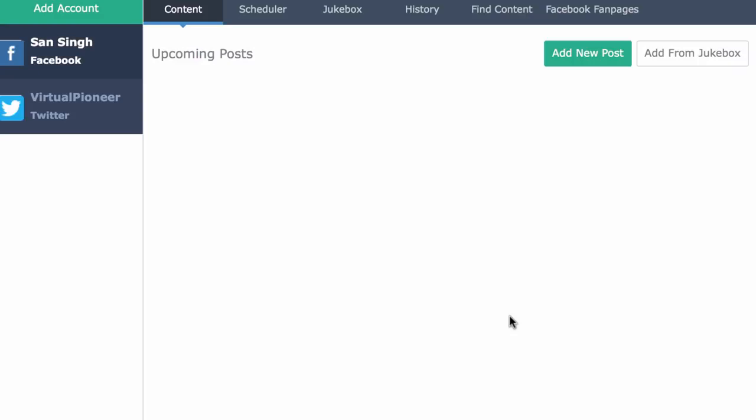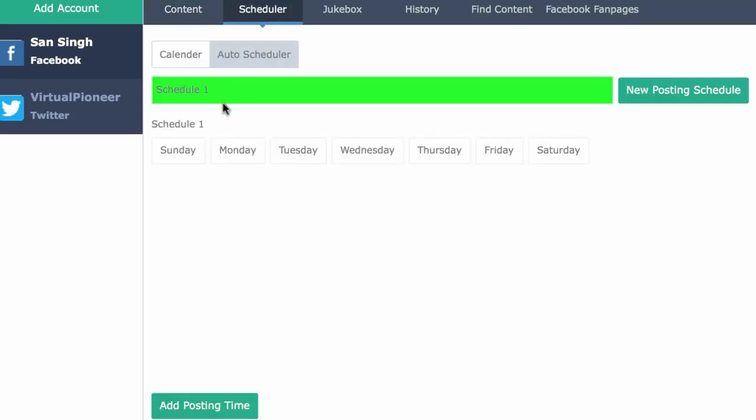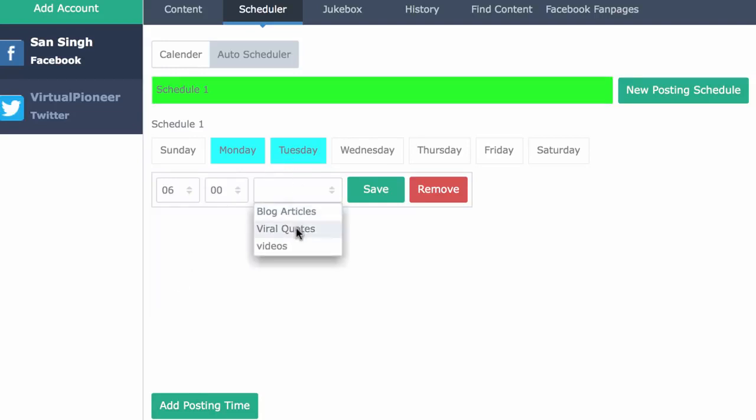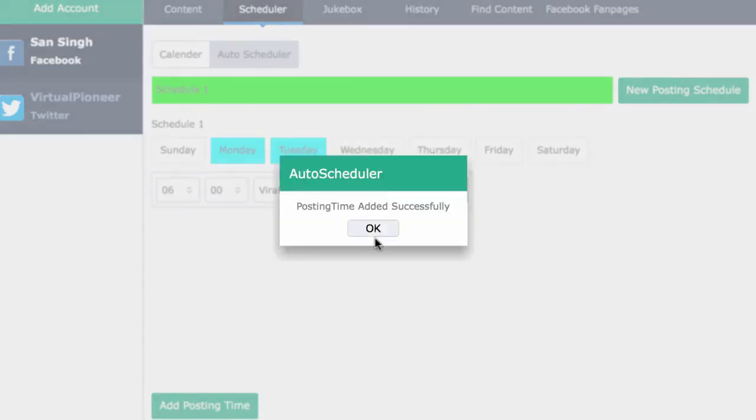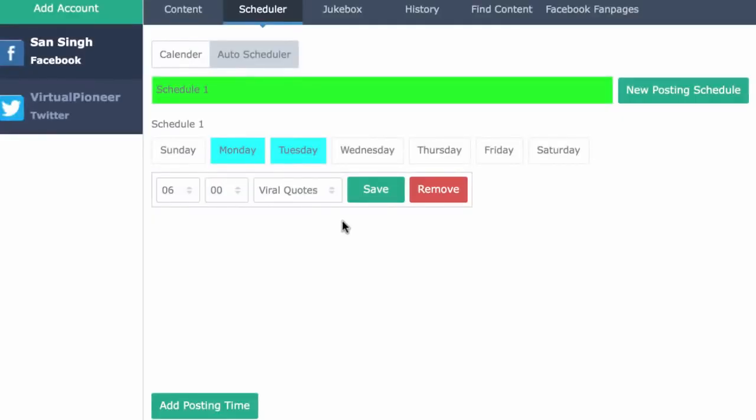Now we can schedule when we want SociVideo Jukebox to post our jukebox content on autopilot by going to the auto schedule section and creating a new content posting schedule. So we can choose that every single Monday and Tuesday at 6 a.m. we're going to have SociVideo Jukebox post content from our quotes jukebox. Then when 6 a.m. happens on Monday, whether we're on our computer or not, SociVideo Jukebox will randomly select a quote image from our quotes jukebox and post it to Facebook.